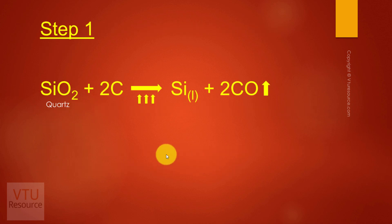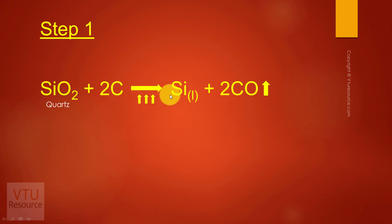First, for the production of metallurgical grade silicon, we take quartz in an electric arc furnace and heat it with carbon to a high temperature. When heated to high temperature, we obtain liquid silicon from the bottom of the electric arc furnace, which is withdrawn continuously. The liquid silicon thus obtained contains a high level of impurities, so we proceed to refine it.